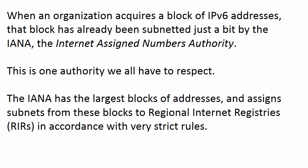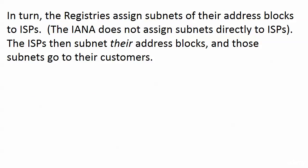When an organization like your company gets a block of addresses, it's already been subnetted a couple of times. First, the block would have been subnetted by the IANA. They have the largest blocks of addresses — the whole pie, if you will — and they don't just hand them directly to you and me. What happens is the IANA assigns subnets from those blocks to regional Internet registries, RIRs, in accordance with very strict rules. The registries then assign subnets of those blocks to ISPs.